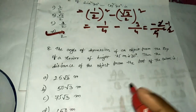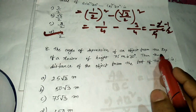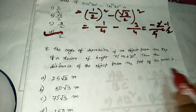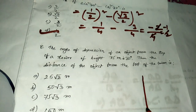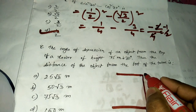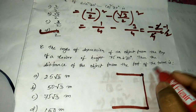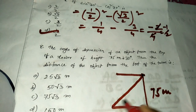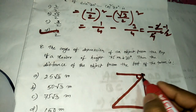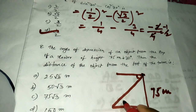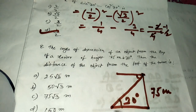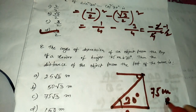Question number eight: the angle of depression of an object from the top of a tower of height 75 m is 30°. Find the distance of the object from the foot of the tower. Draw the tower with height 75 m. The angle of depression is 30°, and by alternate angles, the interior angle is also 30°.